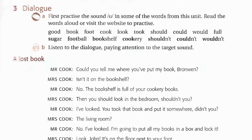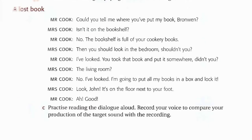3B — A lost book. Could you tell me where you've put my book, Bronwyn? Isn't it on the bookshelf? No, the bookshelf is full of your cookery books. Then you should look in the bedroom, shouldn't you? I've looked. You took that book and put it somewhere, didn't you? The living room? No, I've looked. I'm going to put all my books in a box and lock it. Look, John, it's on the floor next to your foot. Ah, good.